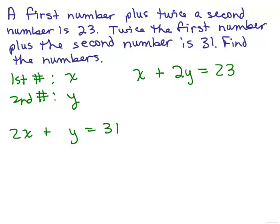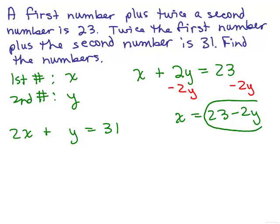So that I could easily solve for x in the top equation. If I solve for x, I need to subtract 2y from both sides, so that x equals 23 minus 2y. I could put a little star so I remember what I substituted.